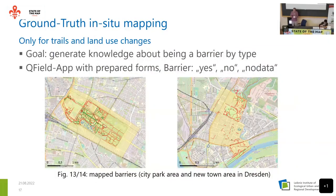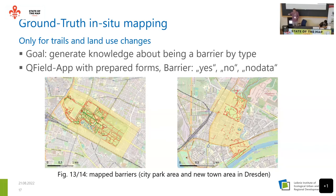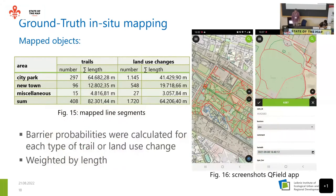From the land use layer, I extracted shared lines between land use A and B to create a line layer. Then I conducted ground truth mapping for selected areas in Dresden — the Großer Garten city park and the Newtown district. I focused on trails and land use changes since their barrier status is uncertain. I used the QField app, with a form giving valid values: yes, no, or no data — the latter for cases where an area was inaccessible because it was private.